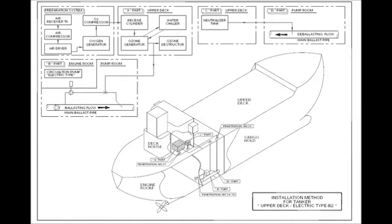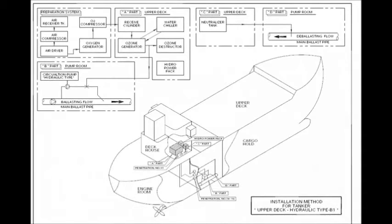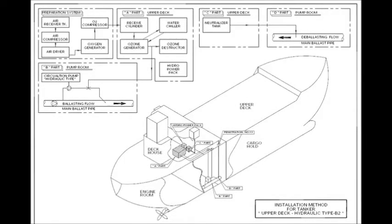For container vessels and bulk carriers, all equipment can be installed in engine room or other place available and just connected by the pipeline between each equipment. For all above cases, no need to modify the ballast pipeline but just fit the ozone injection unit at discharge side of ballast pump.